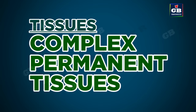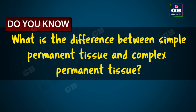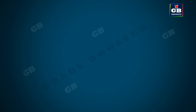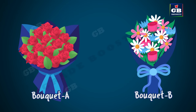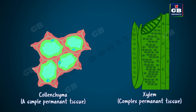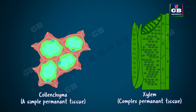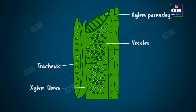Now let us learn about complex permanent tissues in plants. Simple permanent tissue is made up of similar kinds of cells, whereas complex permanent tissue is made up of more than one type of cells. Even though different types of cells exist in one tissue, they all work together for a common function. Complex permanent tissues in plants are of two types: 1. Xylem, and 2. Phloem.